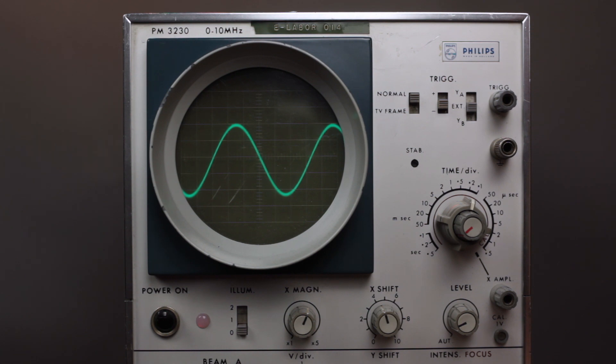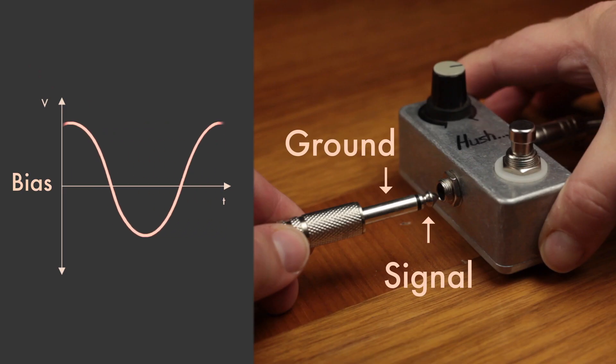The signal oscillates up and down around a mid-voltage or bias level. In cables, most guitars and passive pedals, like the one we're building, the signal oscillates around ground or zero volts.